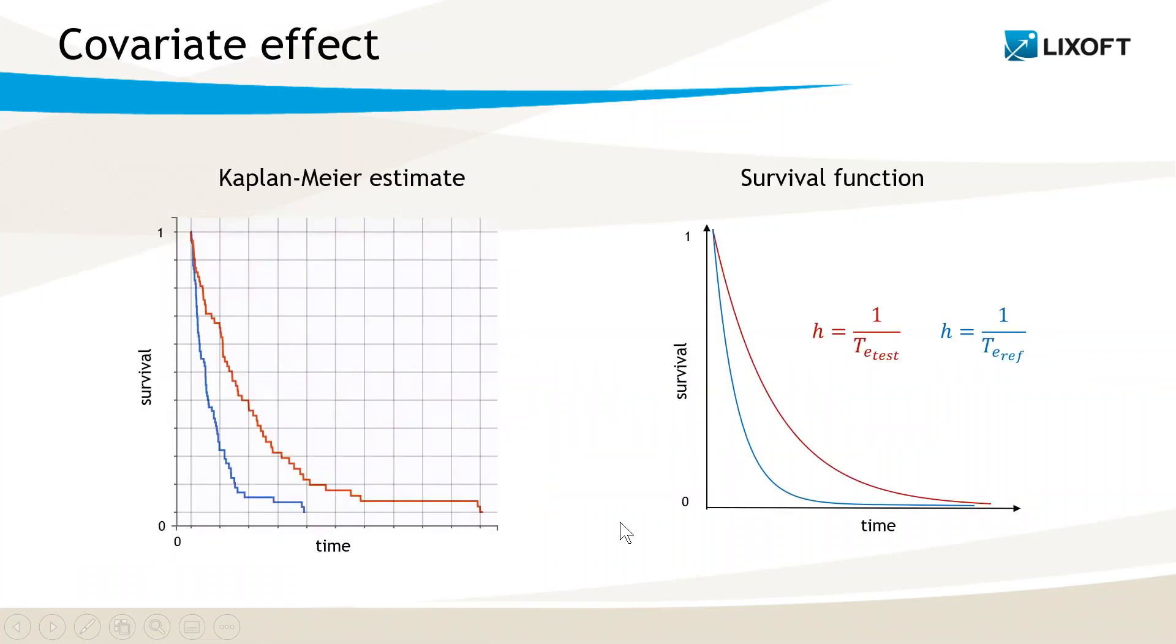An advantage of using parametric models is that there is no restriction on how the covariates affect the hazard. Like for PK models, standard or complex covariate effects can be implemented in individual models for parameters, for categorical or continuous covariates.